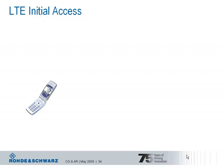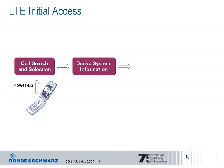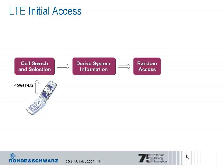Let's assume we have an LTE-capable terminal. The first thing we need to do is to power up the device. Right after powering up, the UE will start with the cell search and cell selection procedure, followed by derivation of system information and execution of the random access procedure. This procedure is summarized and known as LTE initial access.